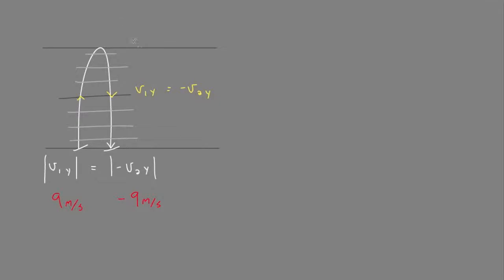At the very top, another thing that's true is the velocity in the y direction is always zero, and this is due to gravity. We know gravity is negative 9.81 meters per second squared.